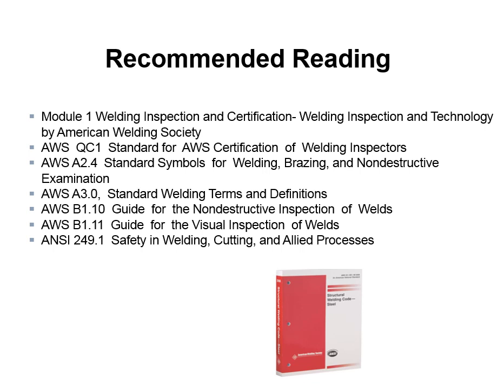Recommended reading for Module 1: Welding Inspection and Technology by the American Welding Society. AWS QC1 Standard for AWS Certification of Weld Inspectors — you can download that off the internet. AWS 2.4 Standard Symbols for Welding, Brazing, and Non-Destructive Examination — you should get a copy of that. AWS 3.0 Standard Welding Terms and Definitions — becoming familiar with welding terms and definitions will be beneficial when you take the test. AWS B1.10 Guide for Non-Destructive Inspection of Welds, AWS B1.11 Guide for Visual Inspection of Welds, and ANSI 249.1 Safety and Cutting and Allied Processes.